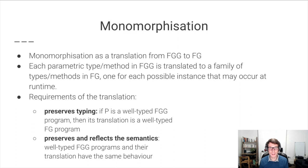Our translation has two requirements. It must preserve typing, that is, if a program is well-typed in FGG, its translation must also be well-typed in FG. The translation must also preserve and reflect the semantics of FGG, that is, a well-typed program in FGG must have exactly the same behavior as its translation.